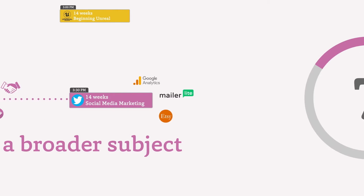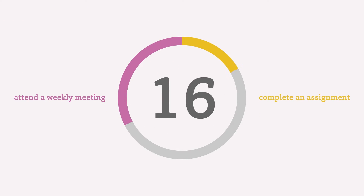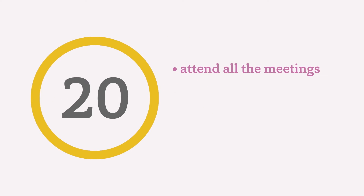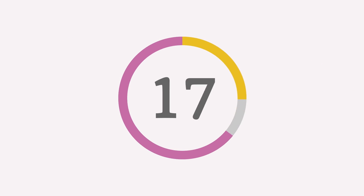You earn points for every time you attend these project group meetings and complete the assignments the student instructors have designed for you. To earn the full 20 or 40 points associated with each project group, you must attend all meetings and complete all assignments to the satisfaction of your student instructor. That means it's possible to gain only 14, 17, or 5 points even if you've completed the project group.